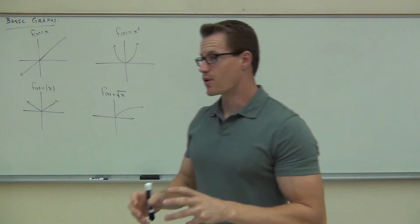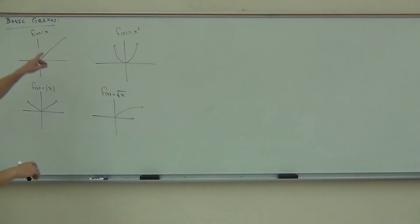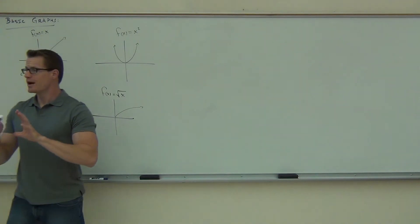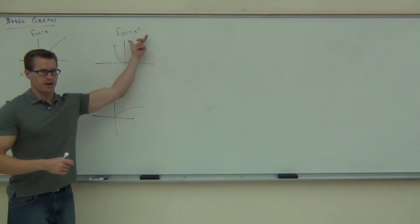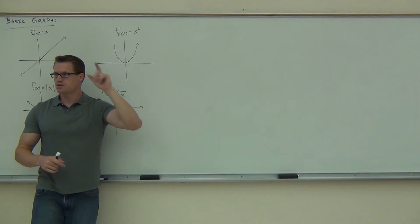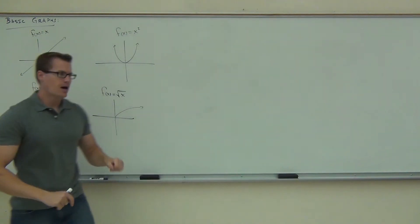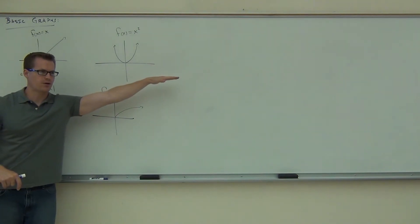I need you to memorize these four shapes. I need you to memorize that if you just have an x or an x plus something or x minus something, you have a line. You've got a diagonal line. If you have an x squared, ladies and gentlemen, it is always going to look like that. It's going to be a parabola. If you have an absolute value, it is always going to be a v. And if you have a square root, it's always going to be this half a parabola on its side, that funny looking shape that we have that goes like that forever. You with me on this?